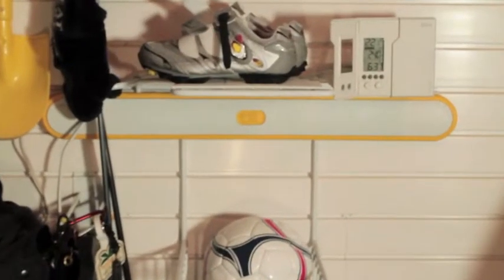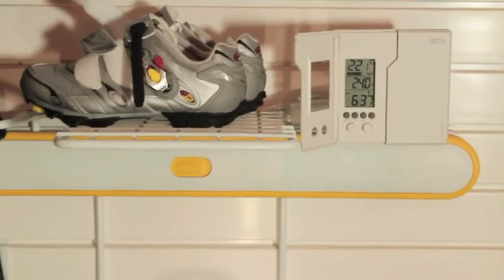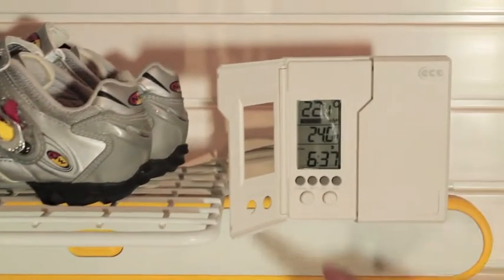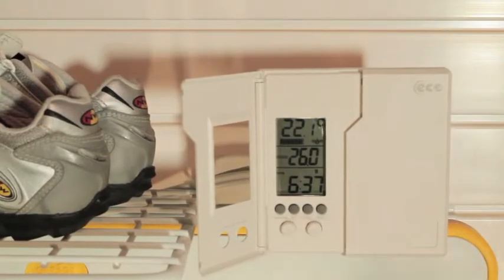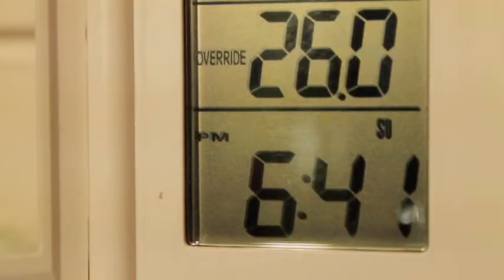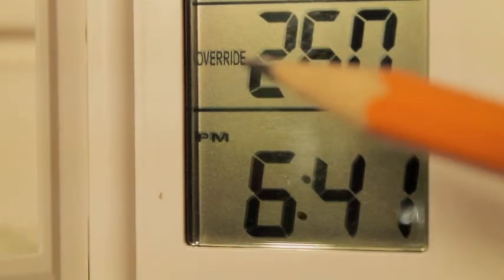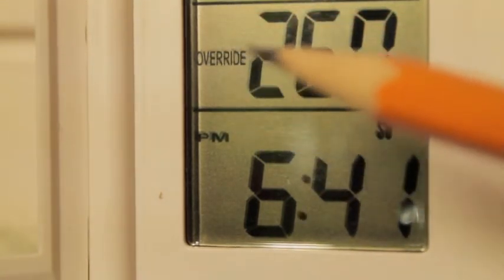Now that programs are set, the thermostat will adjust the temperatures automatically. But you can still adjust the temperatures manually by pressing the up or down arrow buttons. Adjusting the temperature manually will cause the program period to disappear from the screen and the word override will appear in its place. The new temperature will stay in effect until the next program period.